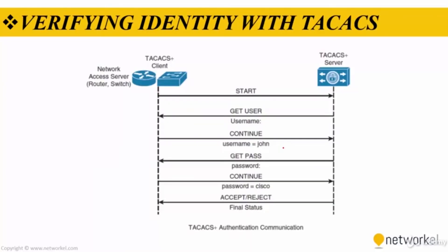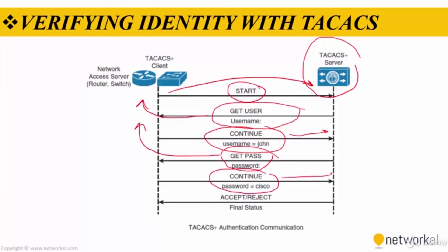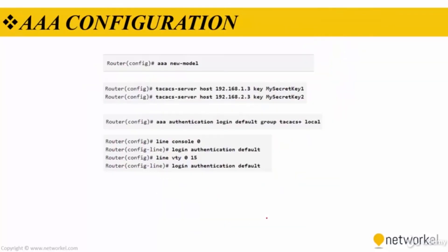Let's see how we can verify identity with TACACS+. The first message going from the client to the server is the START message. The TACACS+ server receives the START message and sends a GETUSER message back to the client, demanding the username. The client sends a CONTINUE message with the username parameter. Then TACACS+ sends a GETPASS message requesting the password. The client replies with a CONTINUE packet containing the password, and finally TACACS+ sends an ACCEPT or REJECT message.